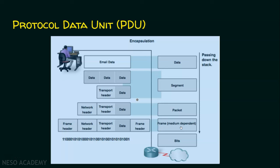This frame is medium dependent. If the connection uses an Ethernet cable, the frame format is different from a Wi-Fi frame — Ethernet frames and Wi-Fi frames are different. Finally, the data link layer information is converted into zeros and ones, so the physical layer PDU is called bits. To summarize: application layer PDU = data, transport layer PDU = segment, network layer PDU = packet, data link layer PDU = frame, physical layer PDU = bits.